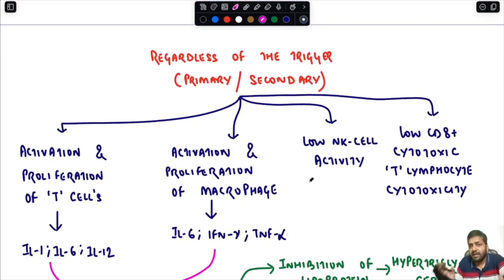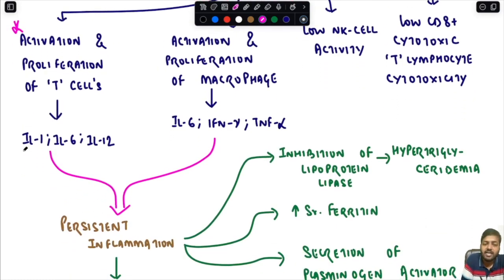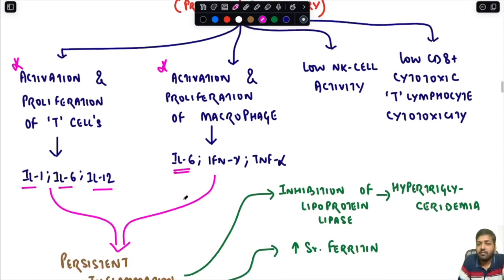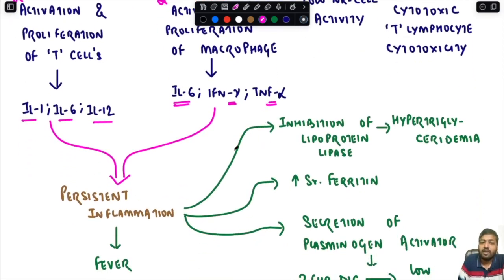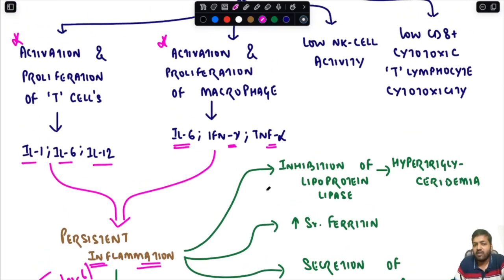Regardless of the trigger — primary or secondary — the basic pathogenesis is the same across all forms of HLH. There is activation and proliferation of T cells, releasing cytokines like interleukin-1, interleukin-6, and interleukin-12. Simultaneously, there is activation and proliferation of macrophages, which release interleukin-6, interferon-gamma, and TNF-alpha. This leads to persistent inflammation. Interleukin-1, interleukin-6, and interleukin-12 are responsible for fever.